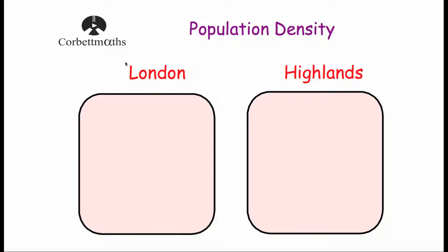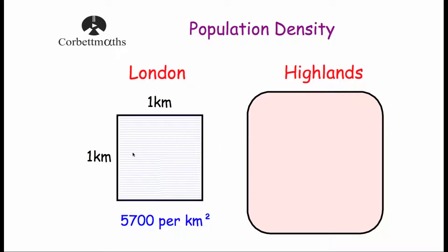If we were to consider London and divide it into one kilometre squares — one kilometre by one kilometre — and divide London into lots and lots of those squares, and share out all the people that lived in London into those kilometre squares equally, what we would find is that in each one of those kilometre squares, there would be approximately 5,700 people.